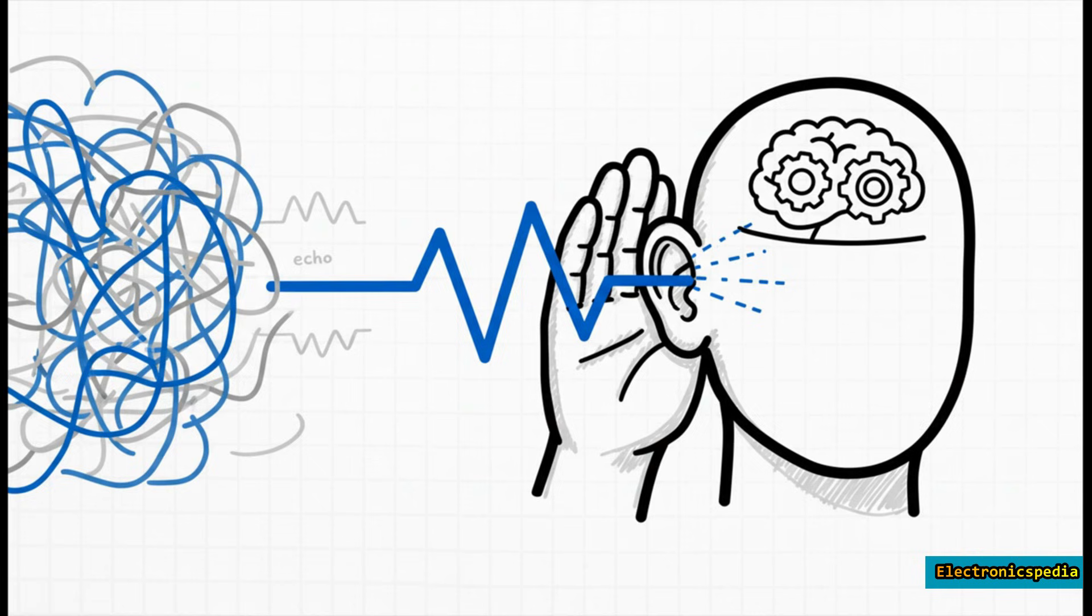In our analogy, this is the listener's half of the job. They're actively helping to clarify the message. They might be cupping their ear to focus the sound, or using their brain to filter out background echo. They aren't just passively hearing, they're actively listening and interpreting to reconstruct the speaker's original words.